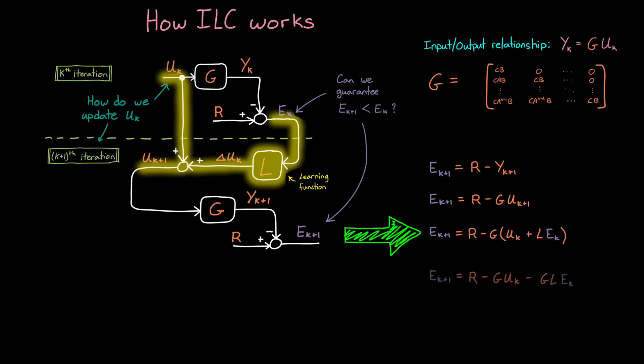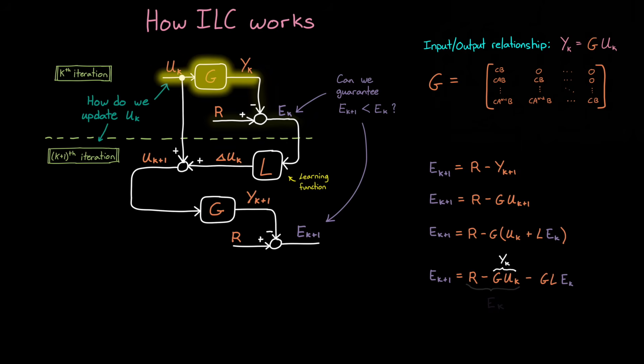And here we can expand this function into these three terms. So now we can reduce this by realizing that g u_k is just y_k, and then r minus y_k is e_k. So now after we pull out e_k from the right-hand side,